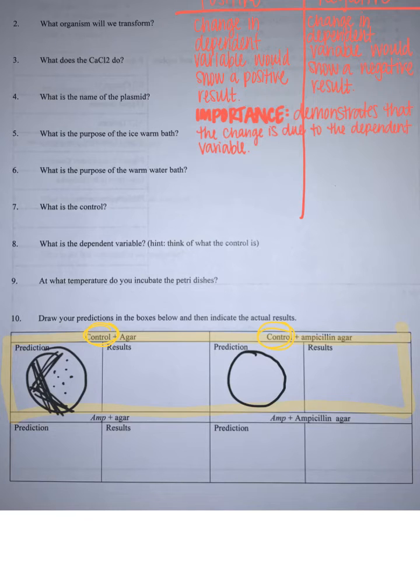My control on the left that does not have the ampicillin, the one where we expect to see bacterial growth, is going to be my positive control. We're expecting to see a positive result, which would be the growth of that bacteria. If we don't, then we could say it's probably something else preventing the growth, not the dependent variable.